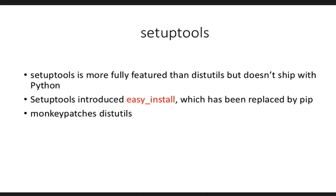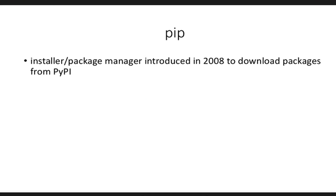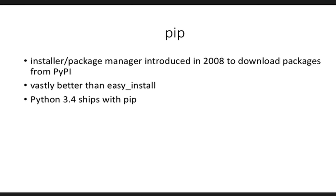Pip, the package manager that succeeded easy_install, was introduced in 2008 to download packages from PyPI. It's a lot better than easy_install in that you can list, upgrade, pip freeze — it ships with a whole bunch of additional functionality that easy_install just didn't have. Python 3.4 ships with pip, but Python 2.7 doesn't. You can install pip using easy_install: doing sudo easy_install pip will get you pip. Pip is pretty much the de facto standard currently for Python package managers.